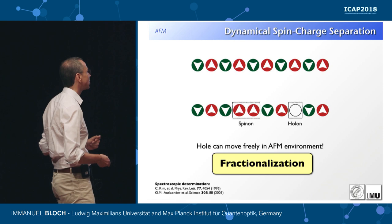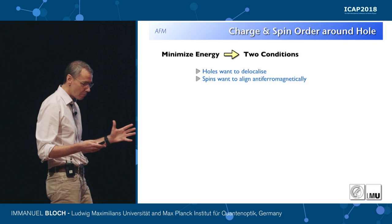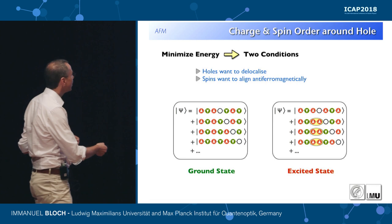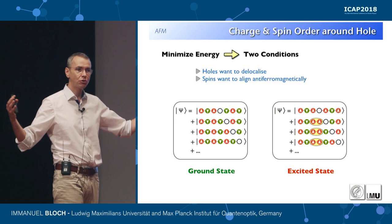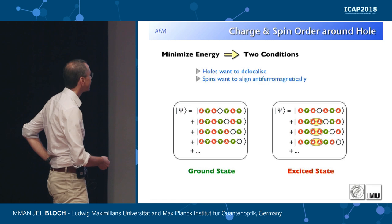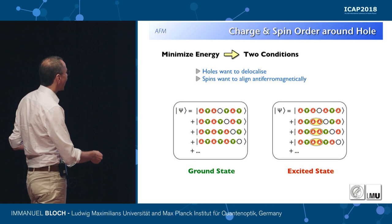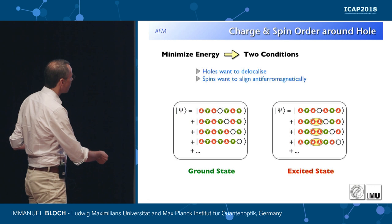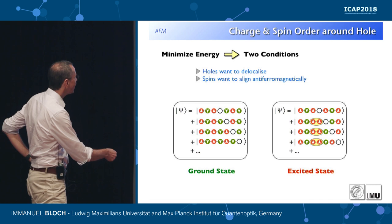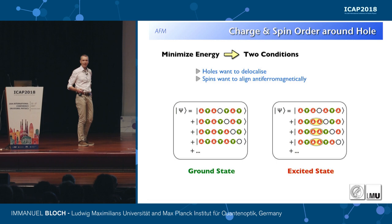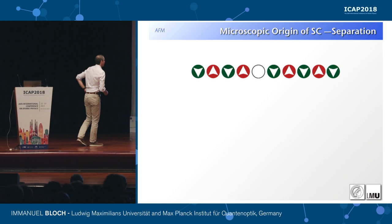Now consider what happens if you gently dope the system — put a hole in as the ground state rather than violently removing one. You have a competition: the hole wants to delocalize to minimize kinetic energy, while the spins want to align antiferromagnetically. In 1D the solution is to favor a configuration where the hole is delocalized over all sites — minimizing kinetic energy — while the bonds remain antiferromagnetically aligned. Crucially, across the ground-state hole the coupling is antiferromagnetic, whereas if you had violently removed a particle it would be ferromagnetic.